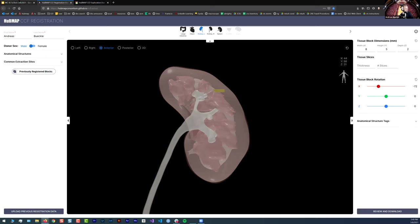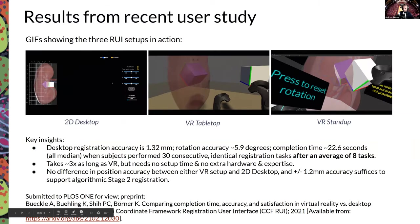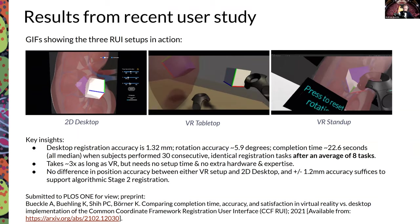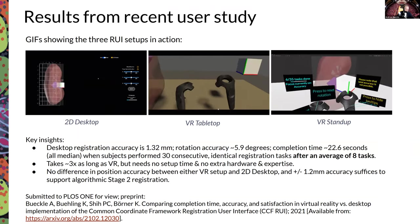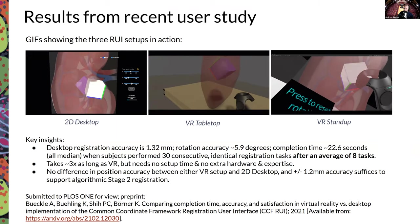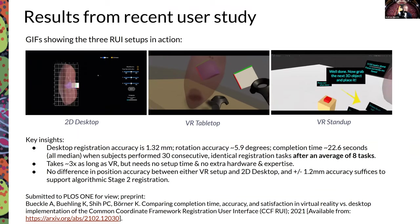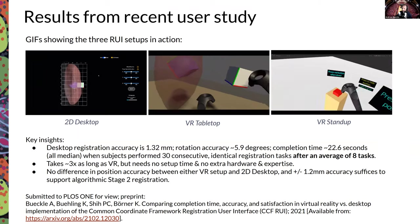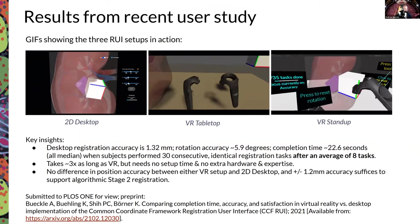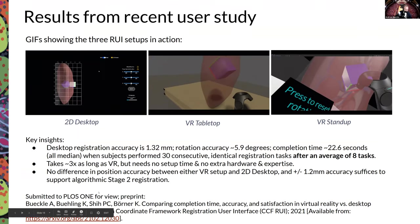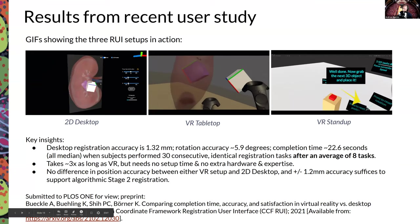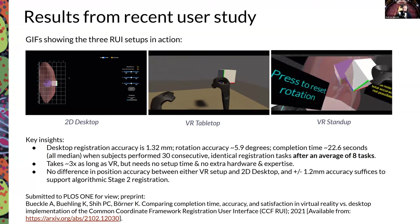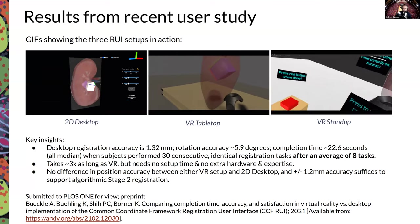We recently conducted a user study comparing a simplified 2D interface with two VR setups. Key findings: while VR is faster than the 2D version, it is not more accurate in terms of position. The raw numbers from training with the 2D version gave us confidence that the RUI is a fast and accurate tool going forward. A paper has been submitted to PLOS ONE for review and a preprint is available — the link has been posted in the chat.